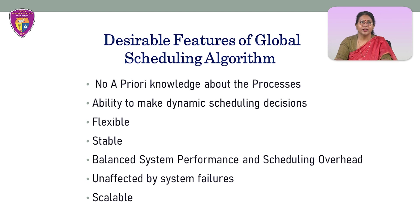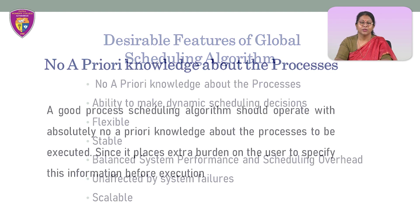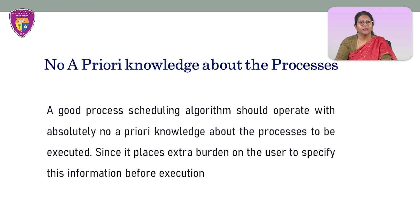Scheduling algorithms that operate based on information about the characteristics and resource requirements of processes pose an extra burden on the users, who must provide this information while submitting their process for execution. A good process scheduling algorithm should operate with absolutely no a priori knowledge about the processes to be executed, since it places extra burden on the user to specify this information before execution.